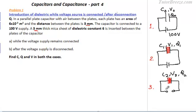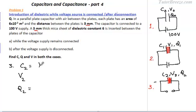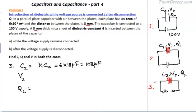Now let's look at the third case: C2, V2, and Q2. The capacitance is kappa times the value with air as the dielectric, so C2 is also 6 times 18 picofarad — the same as in the second case. Since capacitance doesn't depend on Q and V, it makes no difference whether the power supply is connected or disconnected. If the dielectric is introduced, the capacitance increases by the dielectric constant either way. The voltage, however, will change.